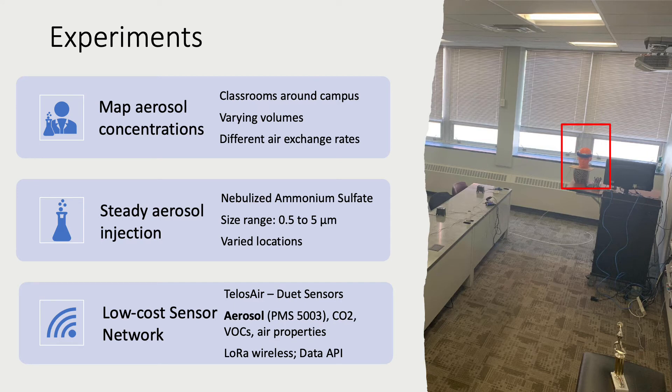We wanted to study and see if the reality is any different from that. We wanted to map aerosol concentrations in classrooms around campus with different volumes, different air exchange rates. We were mapping these concentrations from a generation source, generating at a steady rate using a nebulizer, nebulizing ammonium sulfate in that size range of interest, 500 nanometers to 5 micron. We moved the injection source from being close to the front of the room to middle and back.